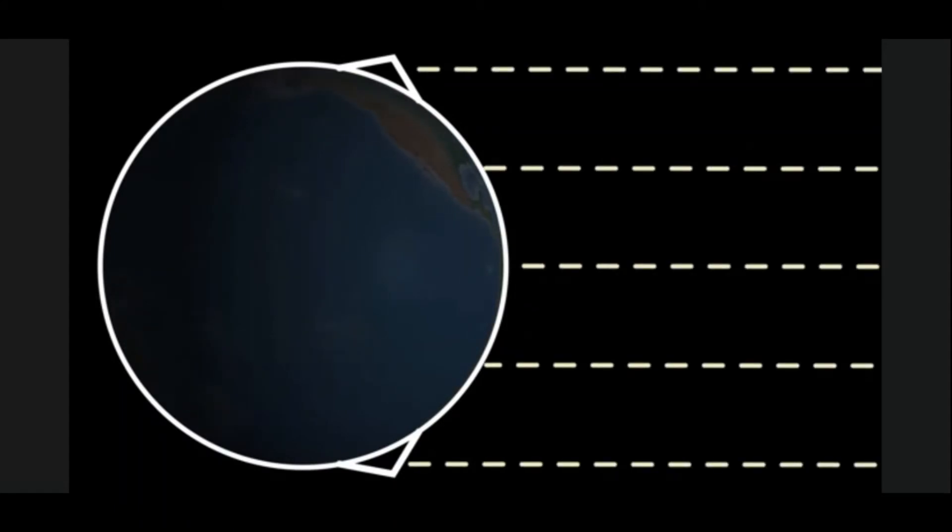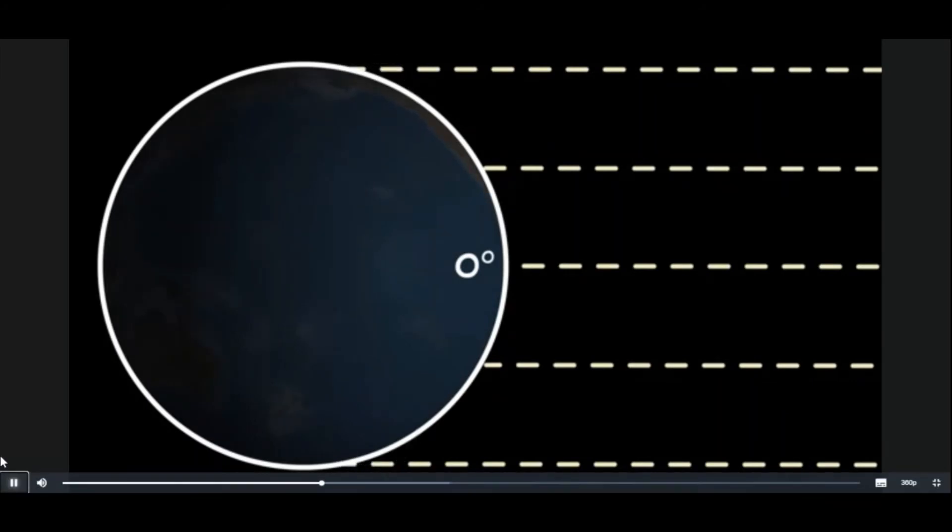At the equator near zero degrees latitude, the sun's rays hit the Earth's surface directly. Here, mountain slopes receive less solar radiation than flat surfaces.